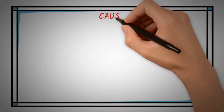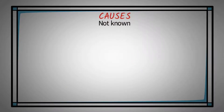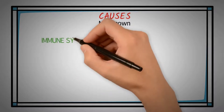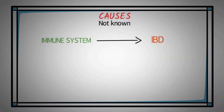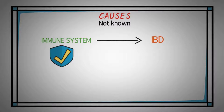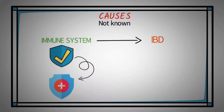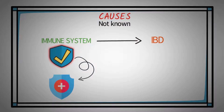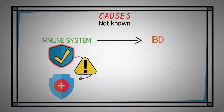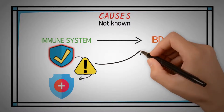Researchers do not know exactly what causes IBD, but the body's immune defense system may trigger it. Usually, the immune system protects the body from infectious viruses or bacteria, and once the infection is gone, that part of the immune system shuts off. But in people with IBD, the immune system may overreact to normal bacteria in the digestive system and does not shut off when it should. Over time, this leads to inflammation, which damages the digestive system.